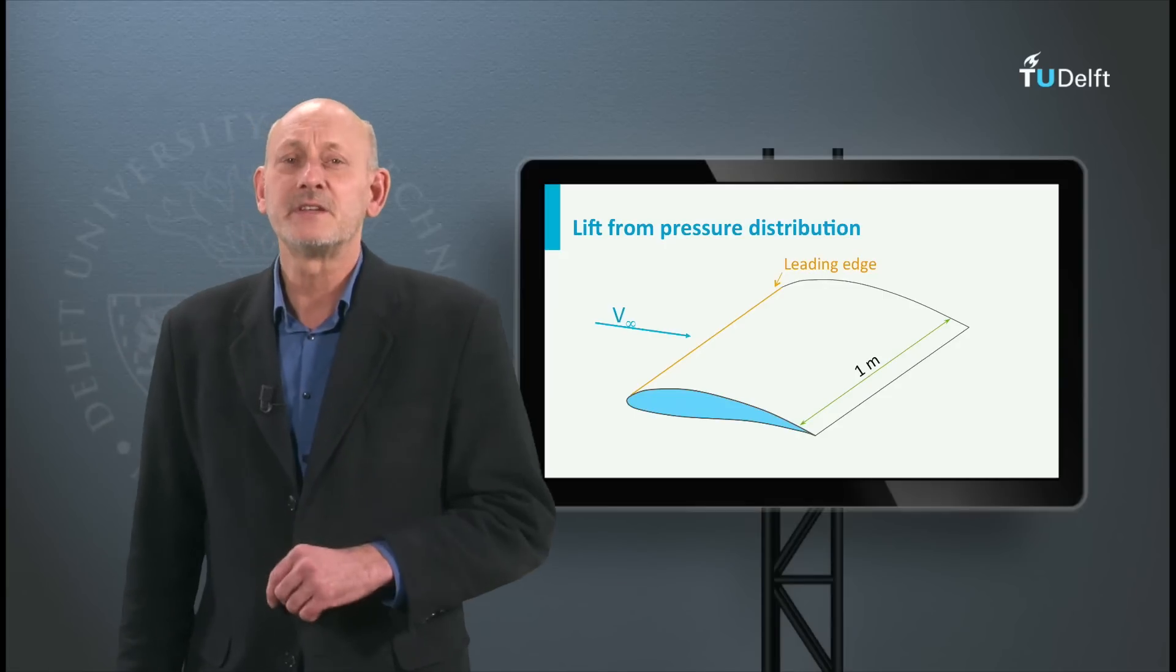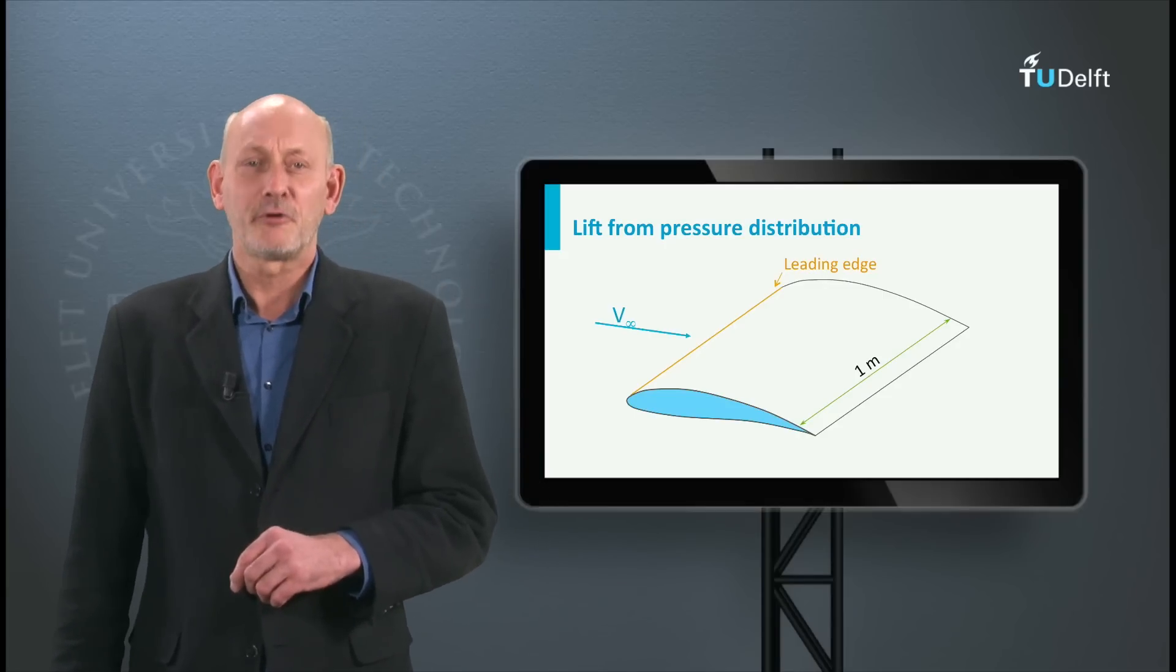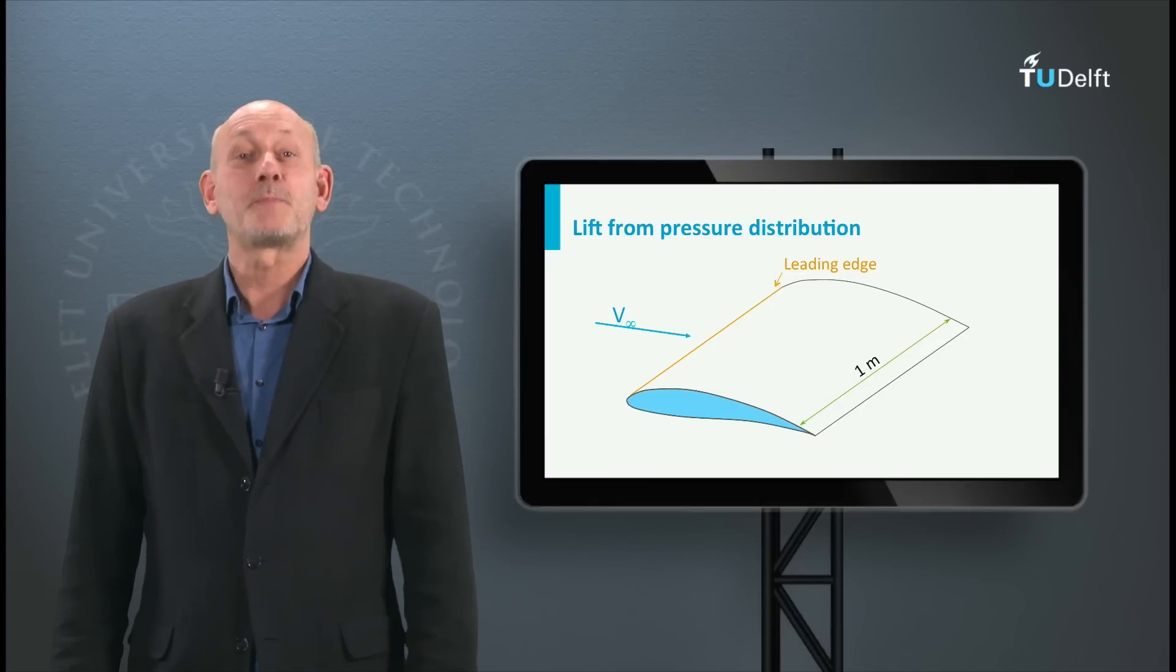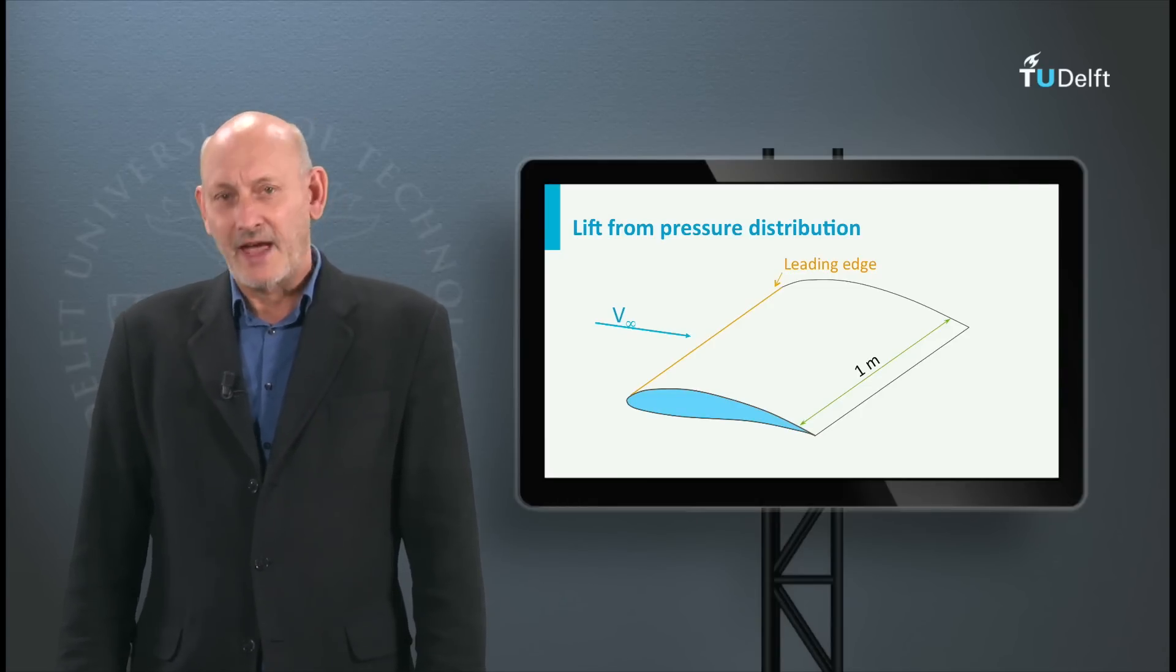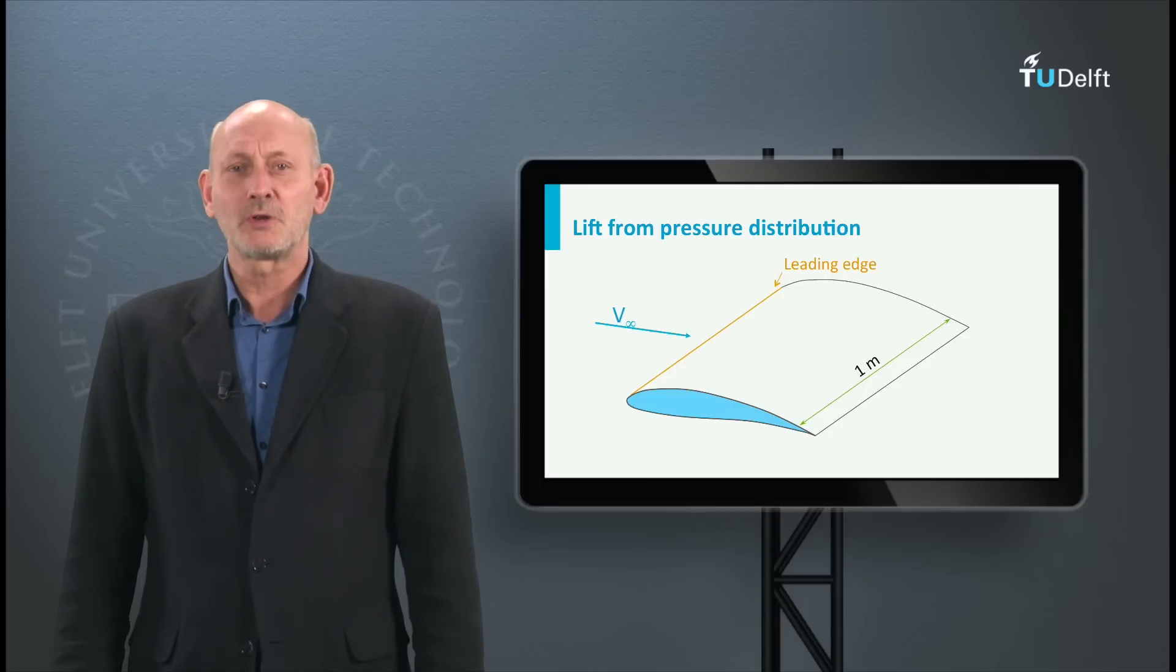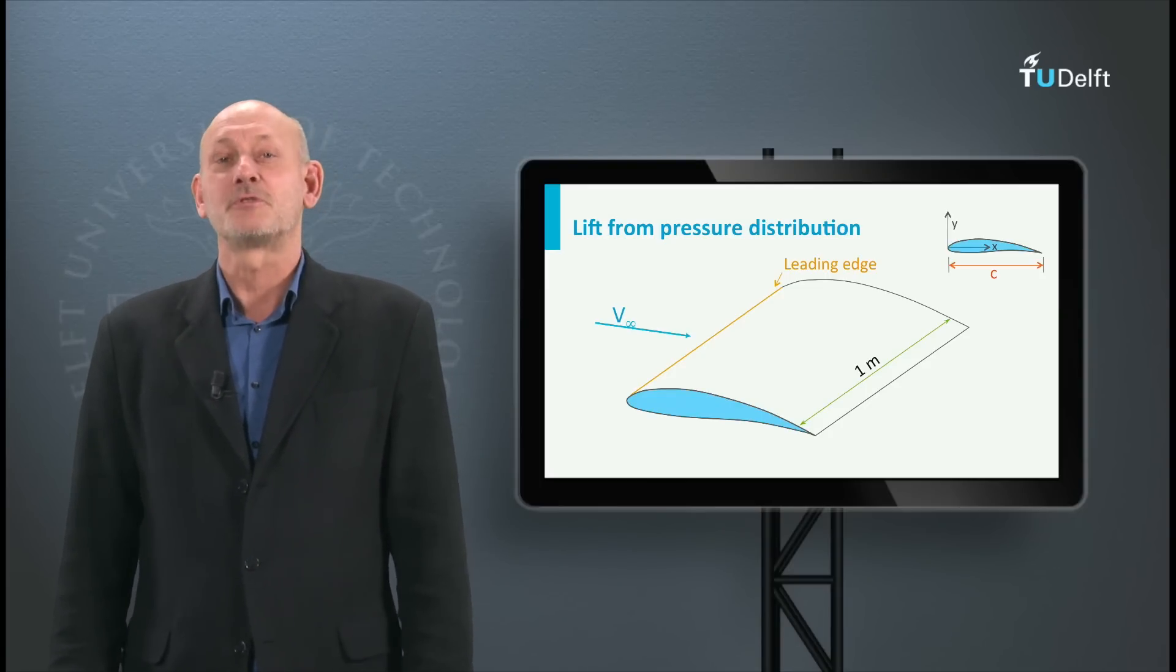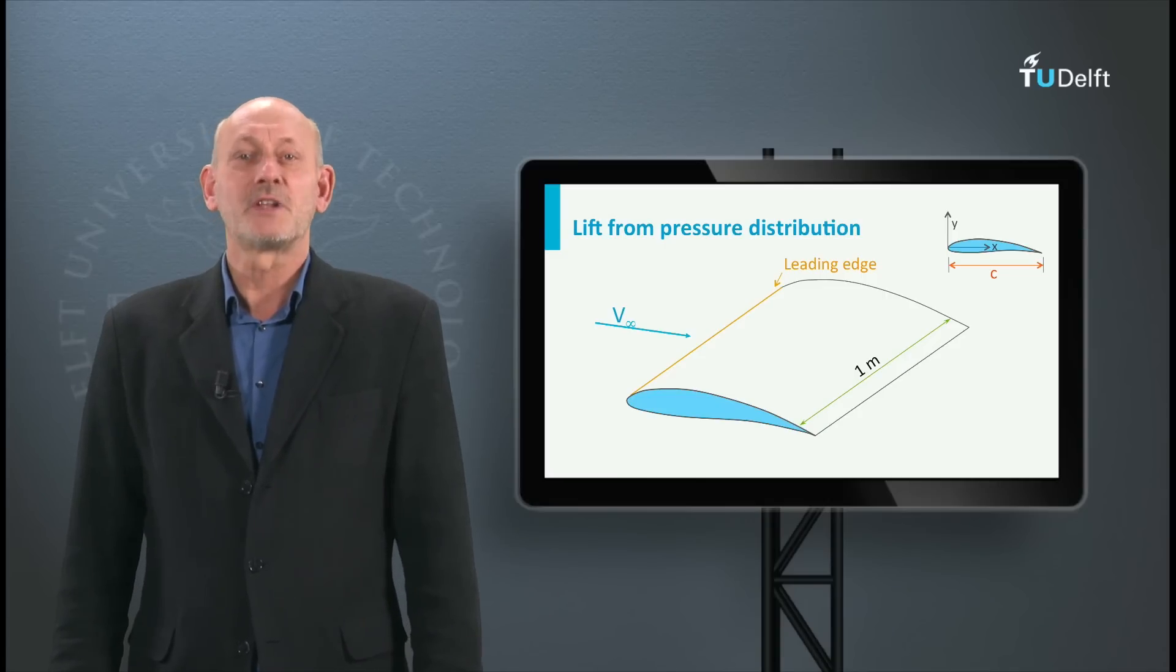Let's consider an infinitely long wing with an airfoil cross-section. We take out a part with a span of 1 meter. The x-coordinate is oriented along the chord line and the y-coordinate is perpendicular to this. The origin is on the leading edge.